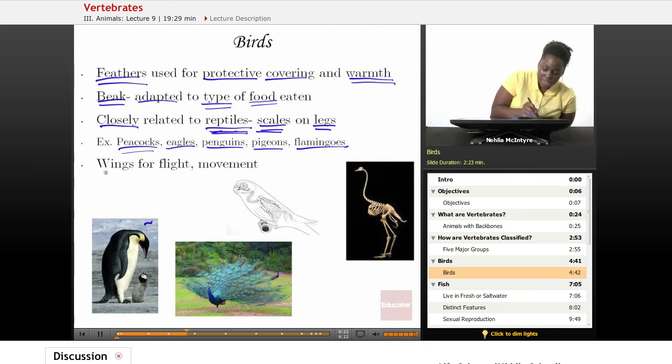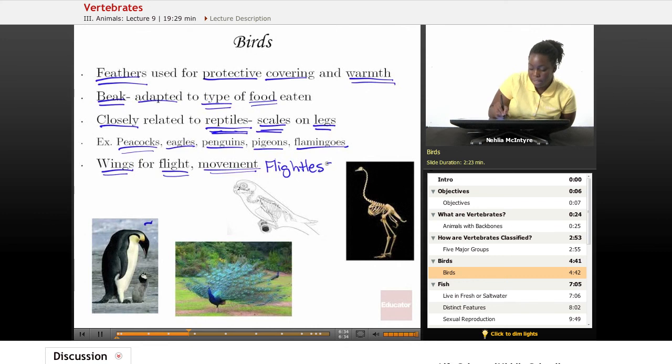One thing is that all birds have wings for flight or for movement. Not all birds can fly. There are flightless birds. And maybe at some point in history, long ago, maybe they were able to fly, but for whatever reason they no longer fly.